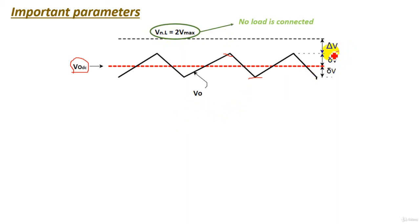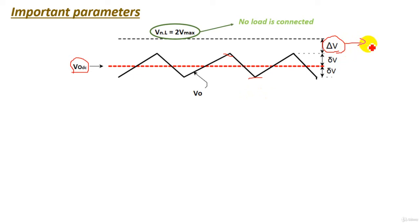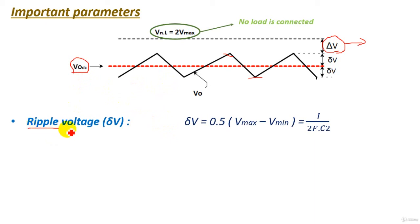When a load is connected, another parameter must be considered: ΔV, the voltage drop. This voltage drop occurs when the load is connected and is due to the power electronic devices such as the diodes and capacitors in our circuit. The voltage drop was neglected in previous circuits because it wasn't significant, but here we use more diodes and produce higher DC voltage, so the voltage drop is significant and must not be neglected.